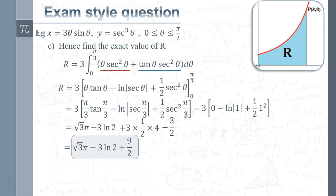Tidying up the constant terms, we end up with 9/2, giving the final result. That question — if it were on an exam paper — is an absolute shocker with all kinds of integration techniques involved, but it gives you an idea of the upper end of what you might be expected to do.